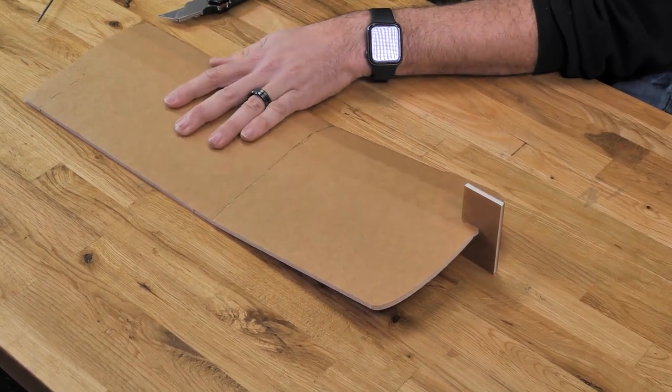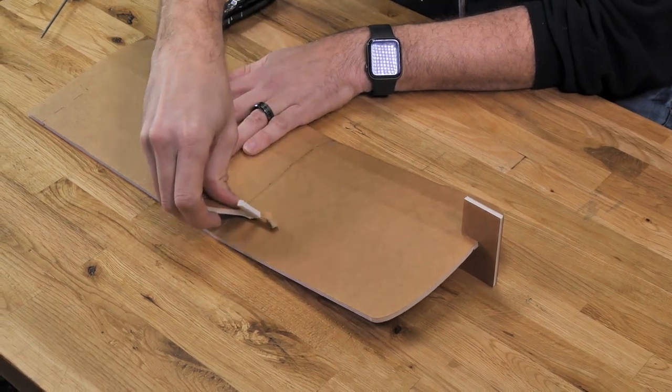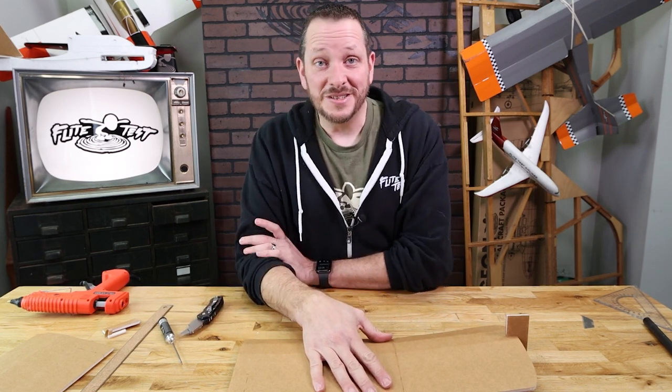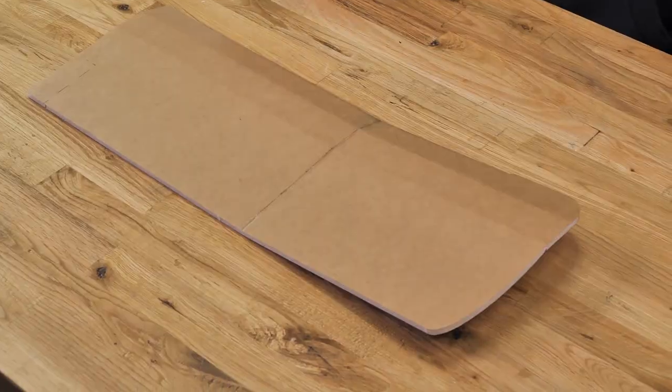And we're going to hold that flat against the table and take a scrap piece of foam and scrape off any excess. Again, we're going to give this a good minute plus to dry until everything's fully cured. We're ready for our next step, and that's going to be gluing the two wing halves together.